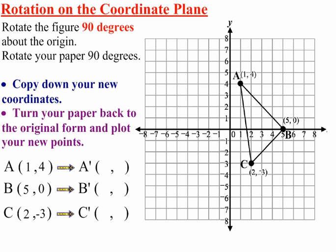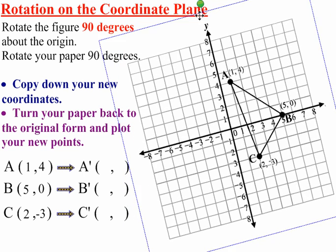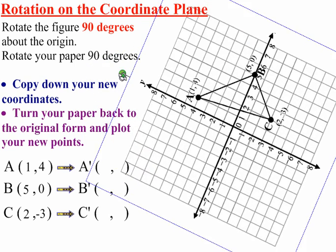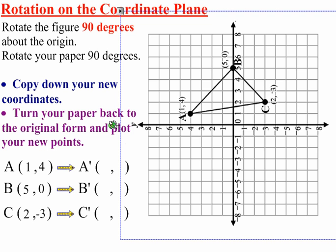This is a rotation of the figure 90 degrees about the origin. The first thing I'm going to tell you to do is to rotate your paper counterclockwise because a counterclockwise rotation is a positive rotation, and that is 90 degrees, so you stop right there. What you're looking at right now